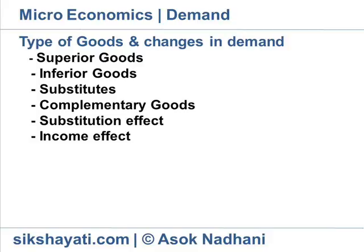Income effect: when the price of a commodity changes, the real income of a consumer also undergoes a change. Real income denotes the consumer's purchasing power. If the price of a product decreases, the real income of a consumer rises and he purchases more units of the product. The demand curve slopes downwards due to this income effect. This is called the income effect for change in demand.